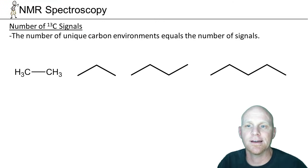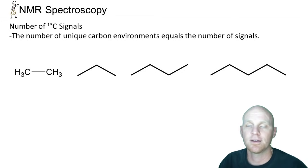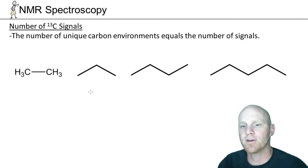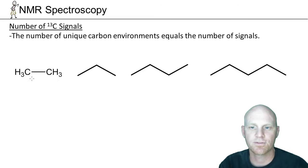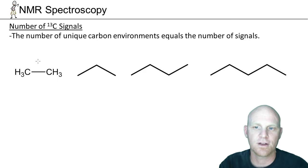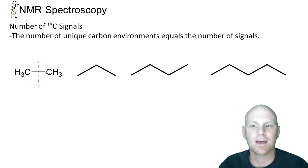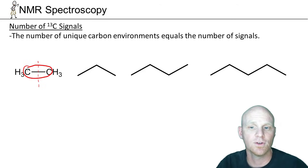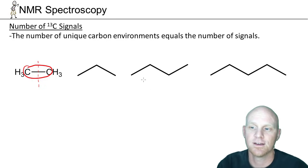The number of signals in the carbon-13 NMR spectrum gives you the number of unique carbon environments in the molecule. If we look at ethane, it's a symmetrical molecule — if we cut it in half, the left-hand side is exactly the same as the right-hand side. So even though there are two carbons in ethane, there's just one unique carbon environment, and we'd only see one signal in the carbon-13 NMR.